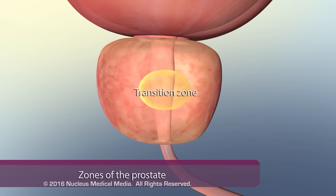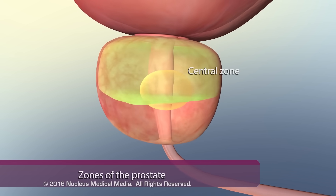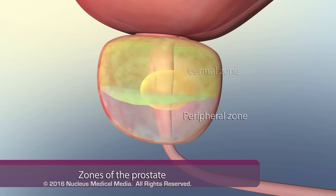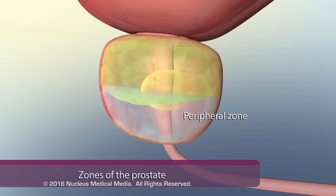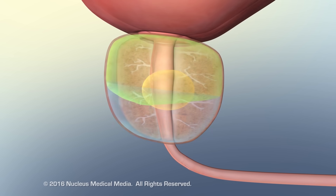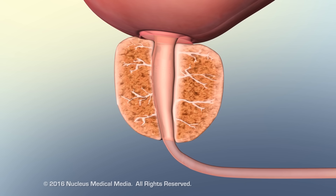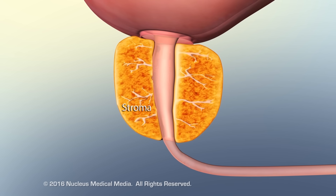Prostate tissue is divided into several functional zones: the transition zone, central zone, and peripheral zone. The prostate consists of secretory glands and ducts surrounded by fibromuscular tissue called the stroma.